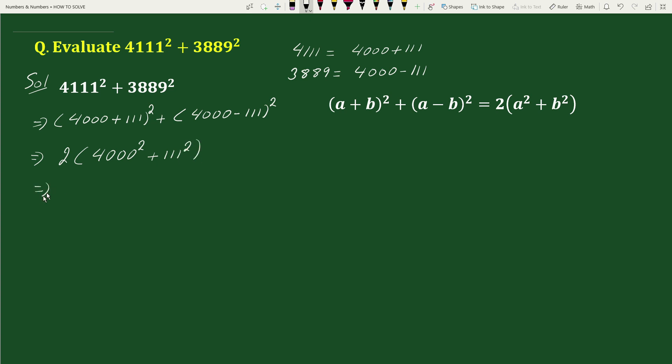This equals to 2 times square of 4000 will be 16 million plus square of 111 will be 12,321. This equals to 2 times 16 million plus 12,321 will be 16 million 12,321.